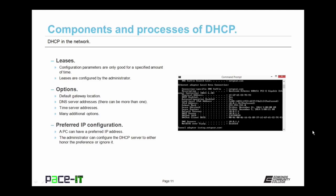When a PC boots up, it does have a preferred IP address — the address it had the last time it booted up. It can request that same IP configuration from the DHCP server. The administrator can configure the DHCP server to either honor that preference or to ignore it.